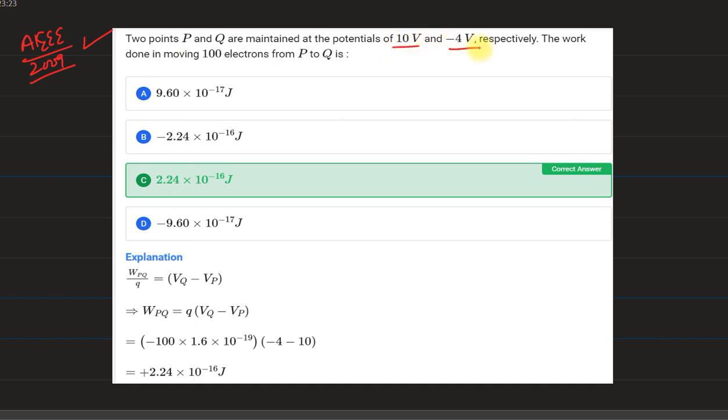Two points P and Q maintain at 10V and minus 4V respectively. Work done in moving 100 electrons from P to Q. Obviously the work formula, work per unit charge is equal to potential difference.